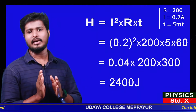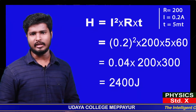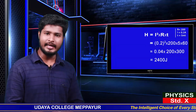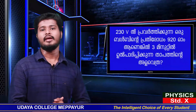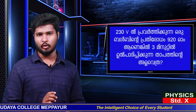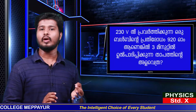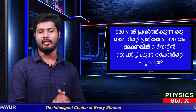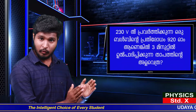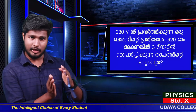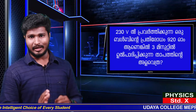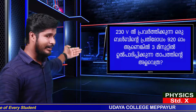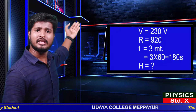Let's do the second problem. If you switch to 230 volts, one bulb is 0.20 amperes. If you switch to 3 minutes, the voltage is 230 volts.